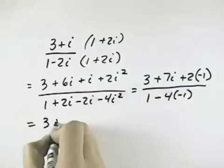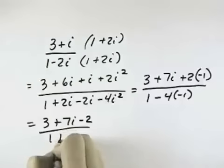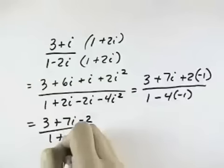So that gives us 3 plus 7i minus 2 over 1, and then minus 4 times minus 1 is plus 4.